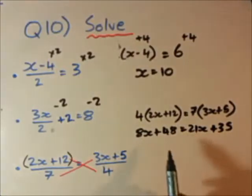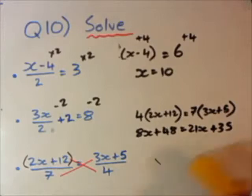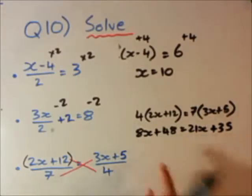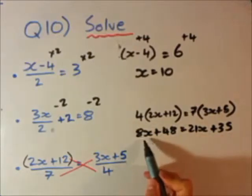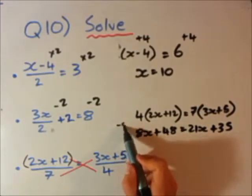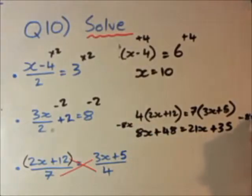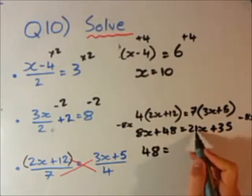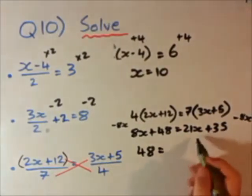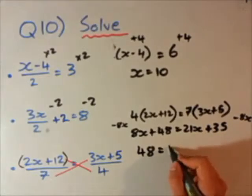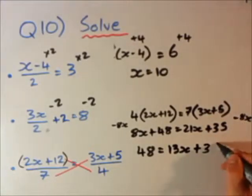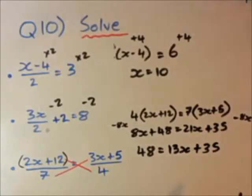Now remember the goal here is to get x equals something. We haven't actually seen this before, so I'll show you what to do here. I've got x's on both sides. Another tip from John: whichever side has the highest number of x's, you want to take away the lowest. So 8x is less than 21x, so I'm going to take away 8x from both sides.